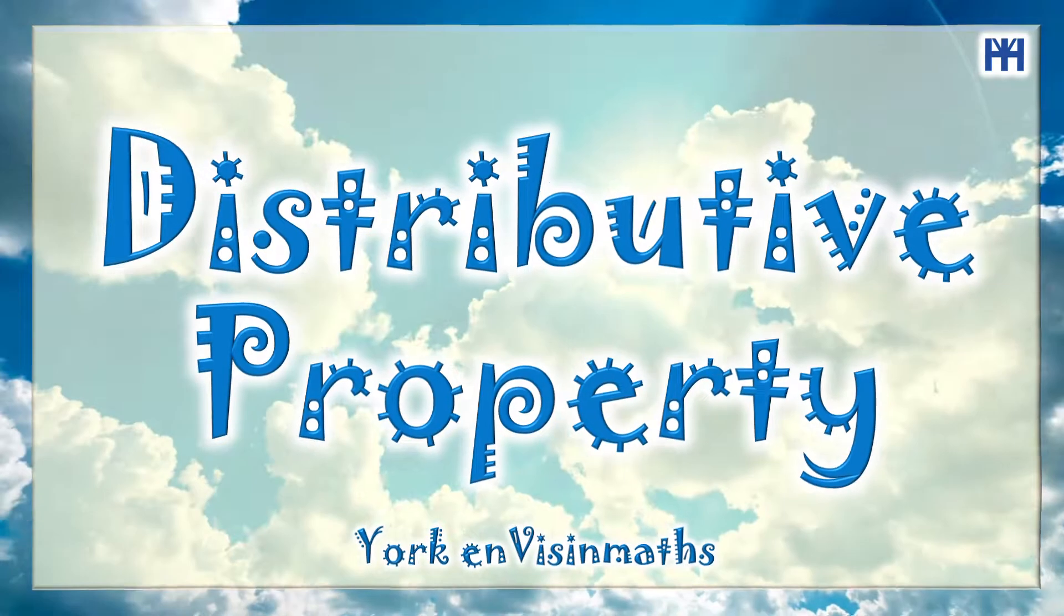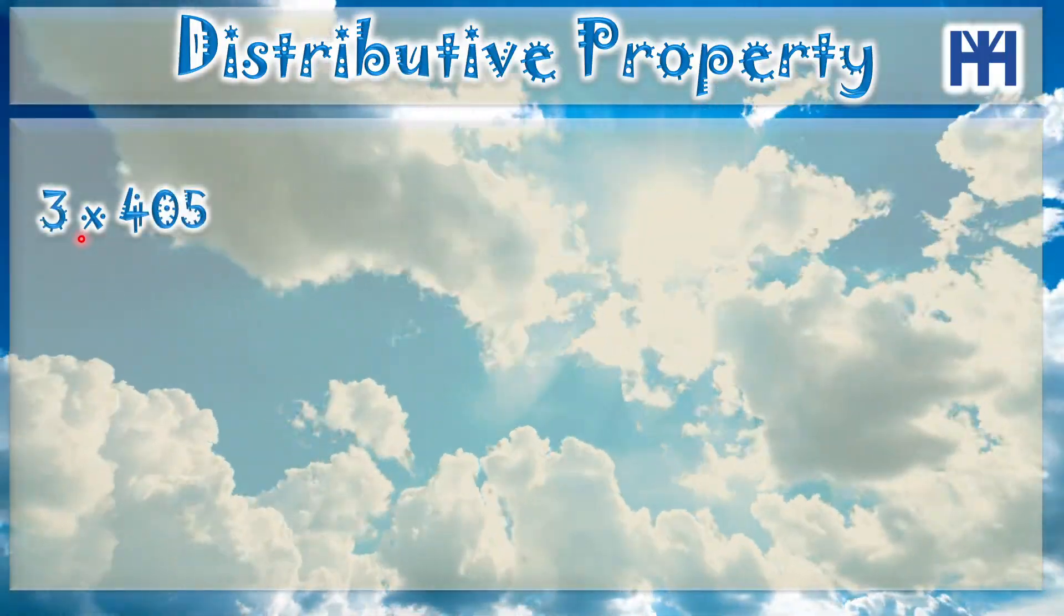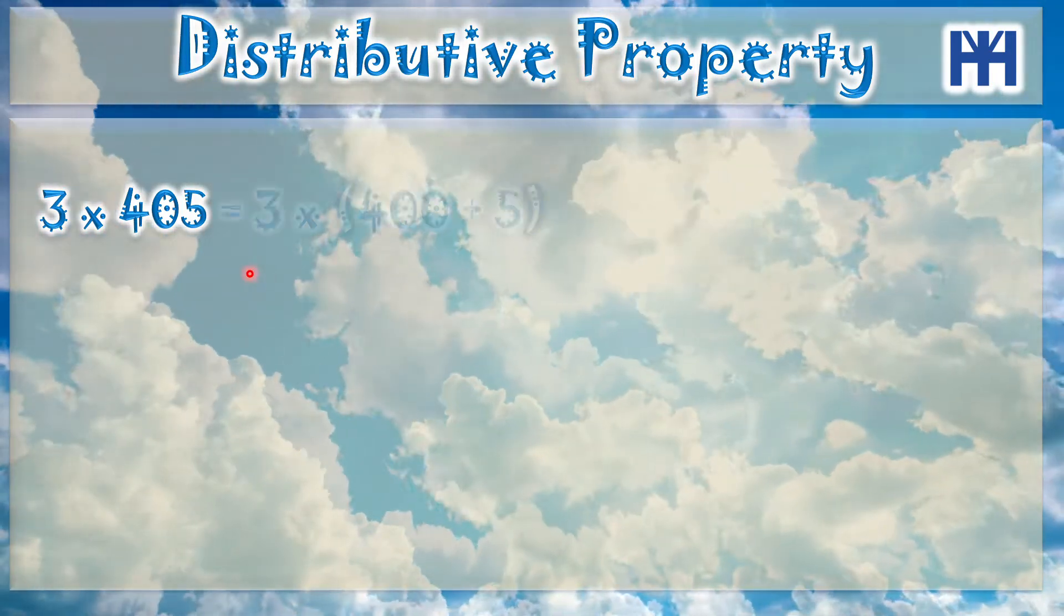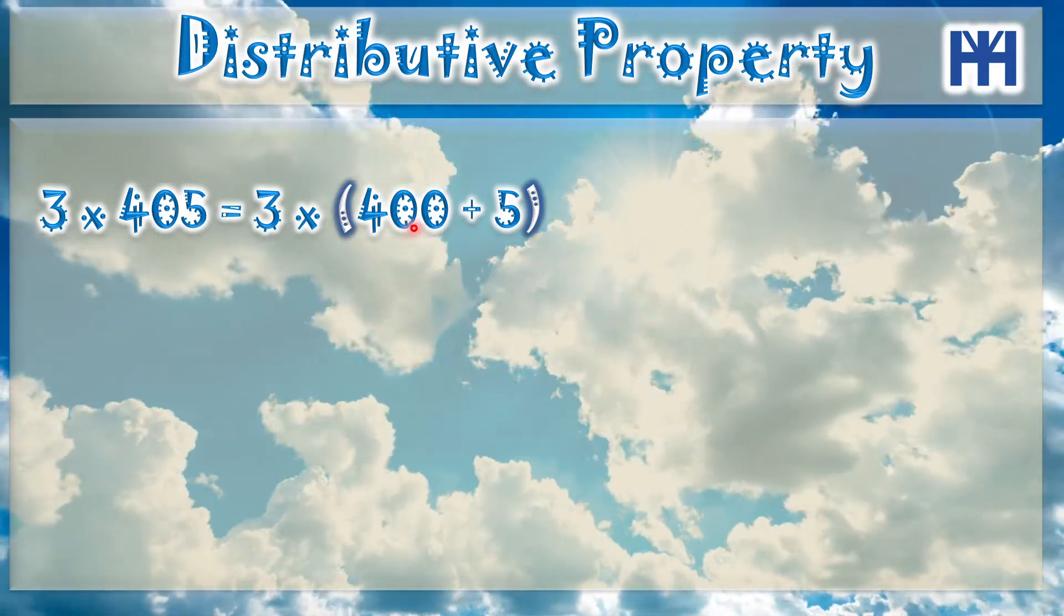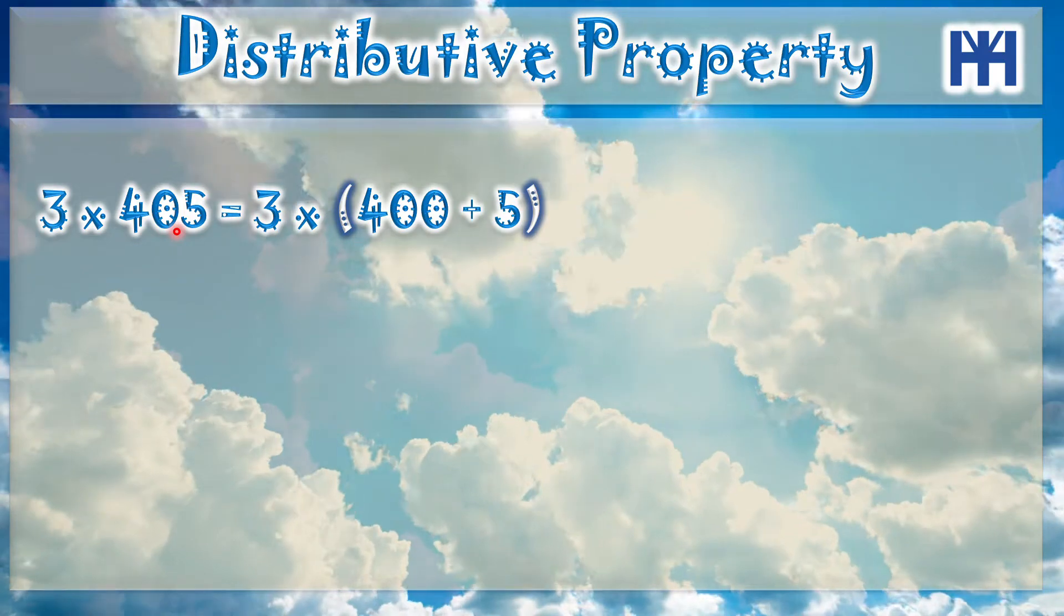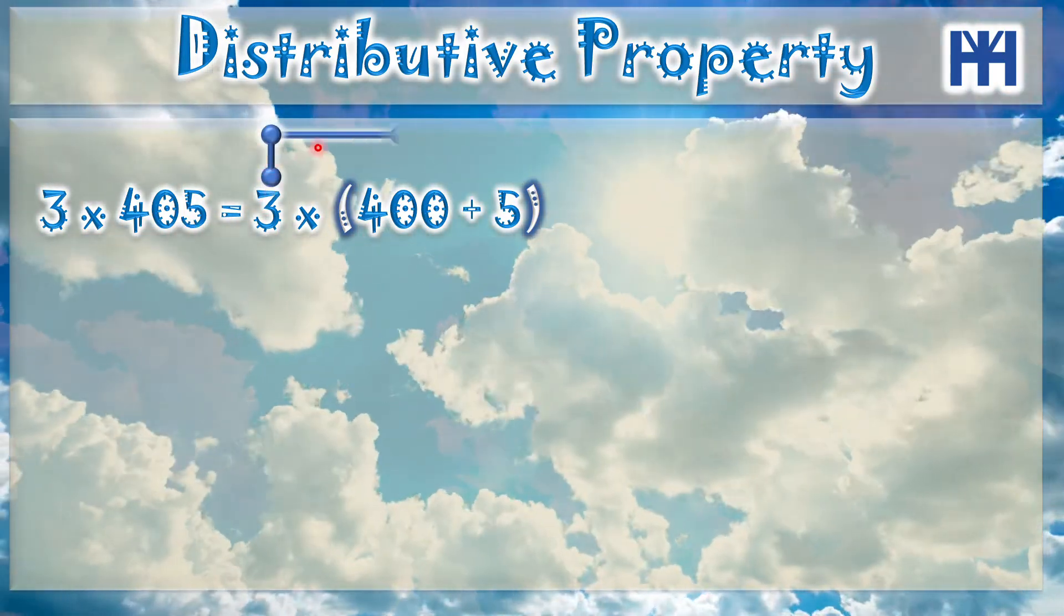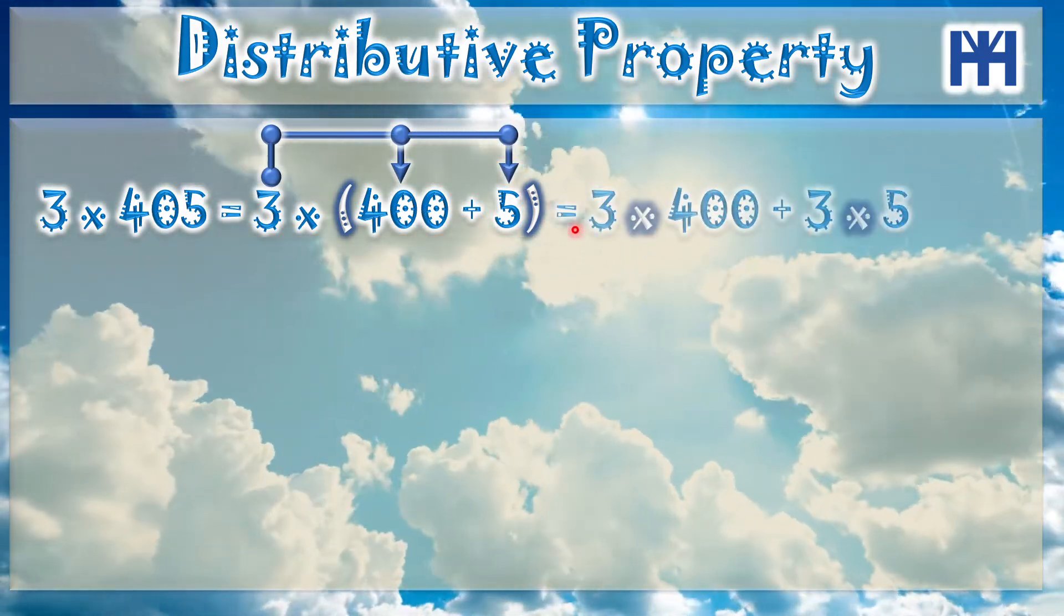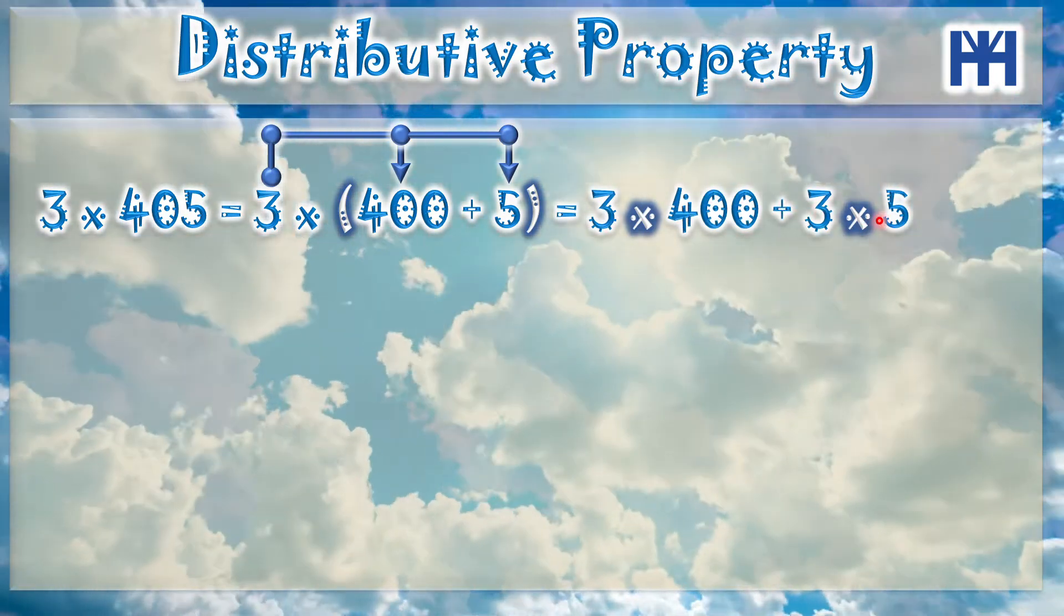Distributive property. Let's say we have 3 times 405, so it's the same as 3 multiply open bracket 400 plus 5. As 400 plus 5 is 405, so what will we do now? You will multiply 3 by the 400 and you multiply 3 by the 5. So the result will be 3 multiply 400 plus 3 multiply 5.